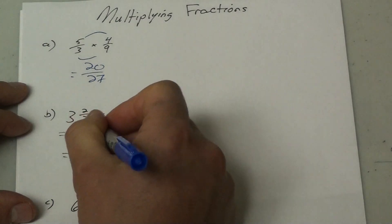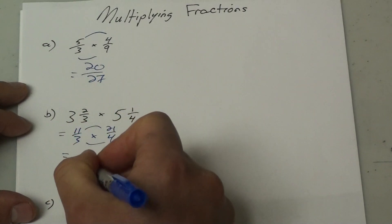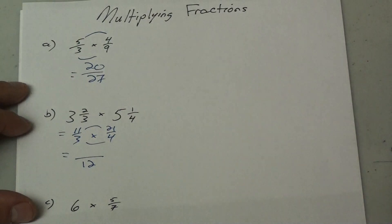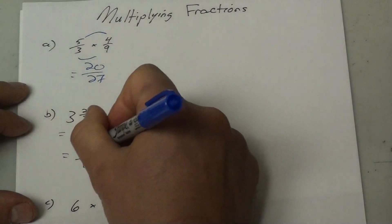So again, I multiply the tops together and I multiply the bottoms together. So I get 12 on the bottom and on the top, I'd have 11 times 21, which is 231.